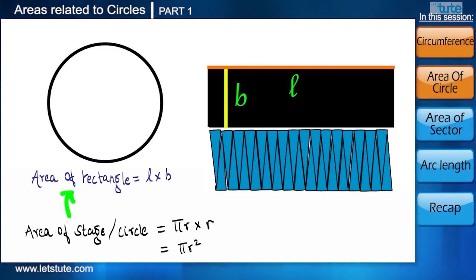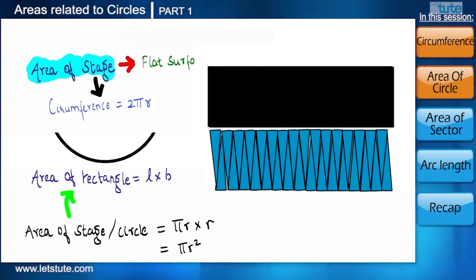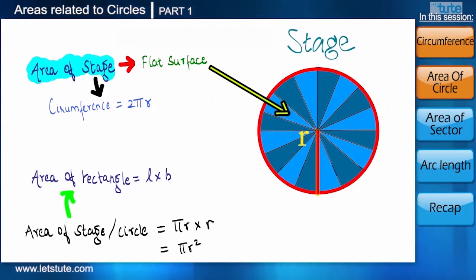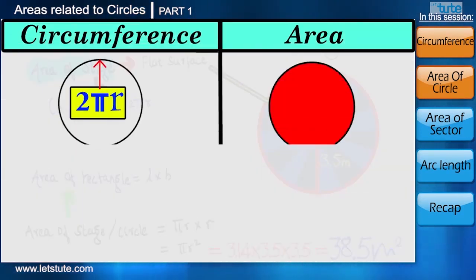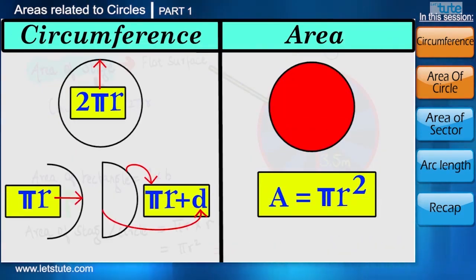From this, we can conclude that the area of the stage or circle is equal to the area of rectangle, which is equal to πr². Using this, we can calculate area of any circle where we know only the radius of the circle. So now we can find the area of the circular stage because its radius is 3.5 meters. So when we put the value of radius, the area of the stage will come to 38.5 meters square. Here we are done with two important formulae which are related to a circle.